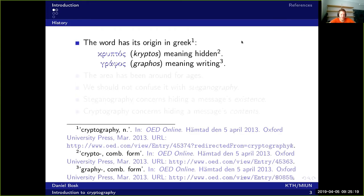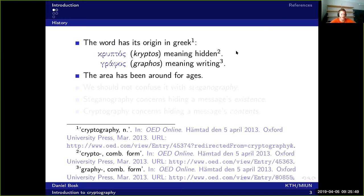The word cryptography has its origin in the Greek language — it comes from the words 'cryptos' and 'graphos'. Cryptos simply means hidden and graphos means writing. So it's hidden writing — how you can hide your writing from prying eyes. The area has been around for ages, and for as long as people have had military organizations, we've had some form of cryptography.